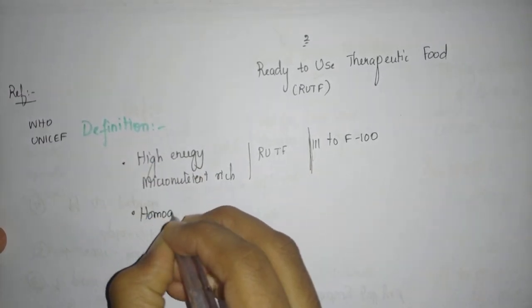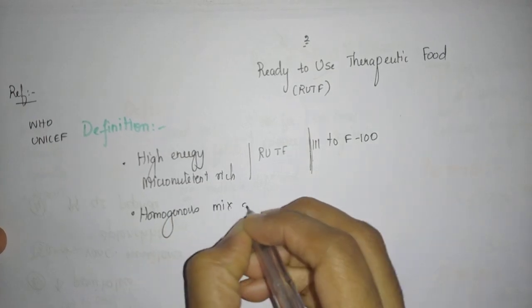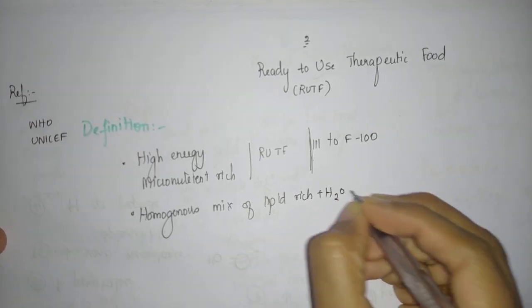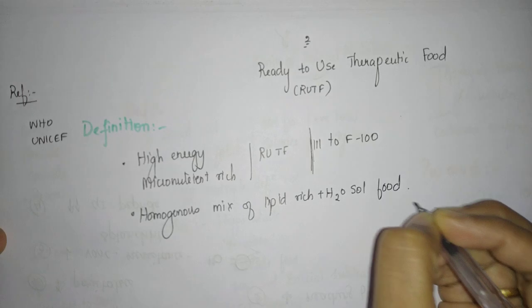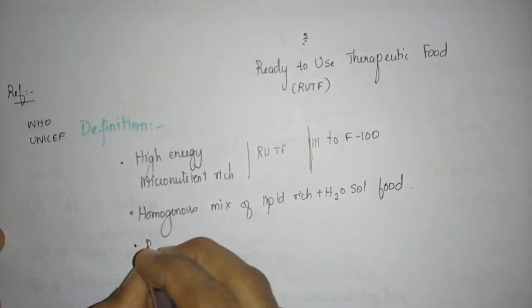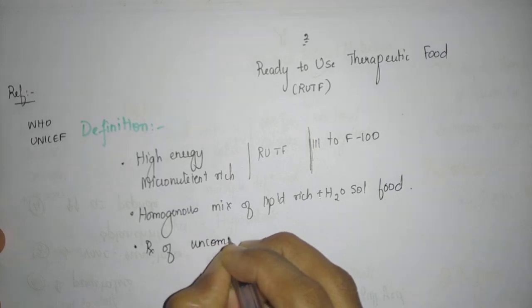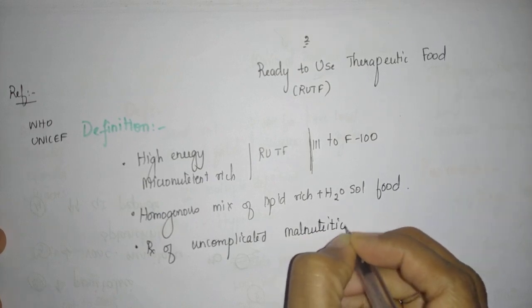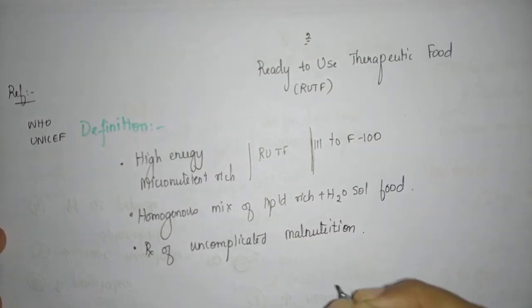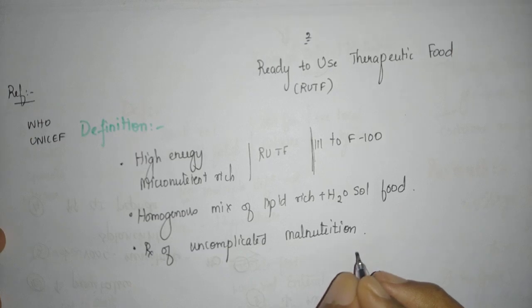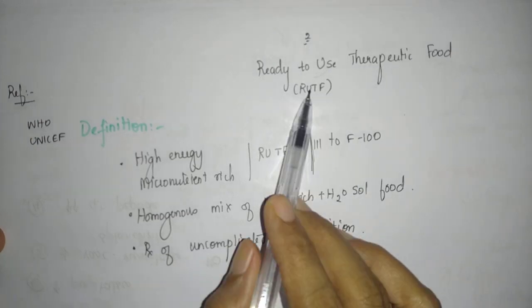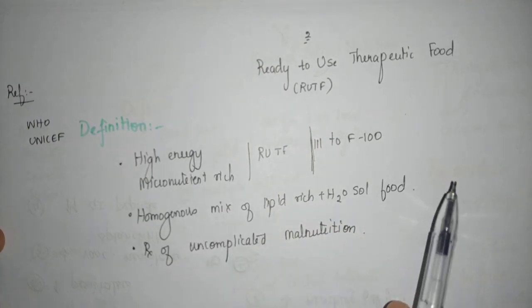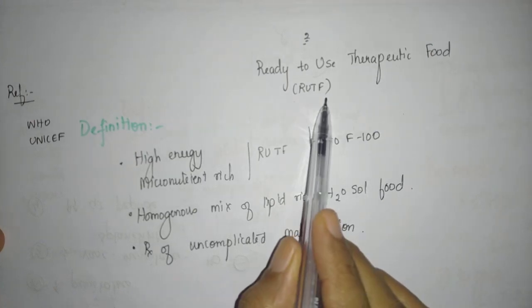This is mainly used in the treatment of uncomplicated malnutrition. This is very important. A child who is coming with sepsis, hypoglycemia, convulsions, etc. will require immediate care and not ready-to-use therapeutic food. This is not a panacea for all sorts of malnutrition. The things that have to be corrected initially will be corrected, and this is given later.